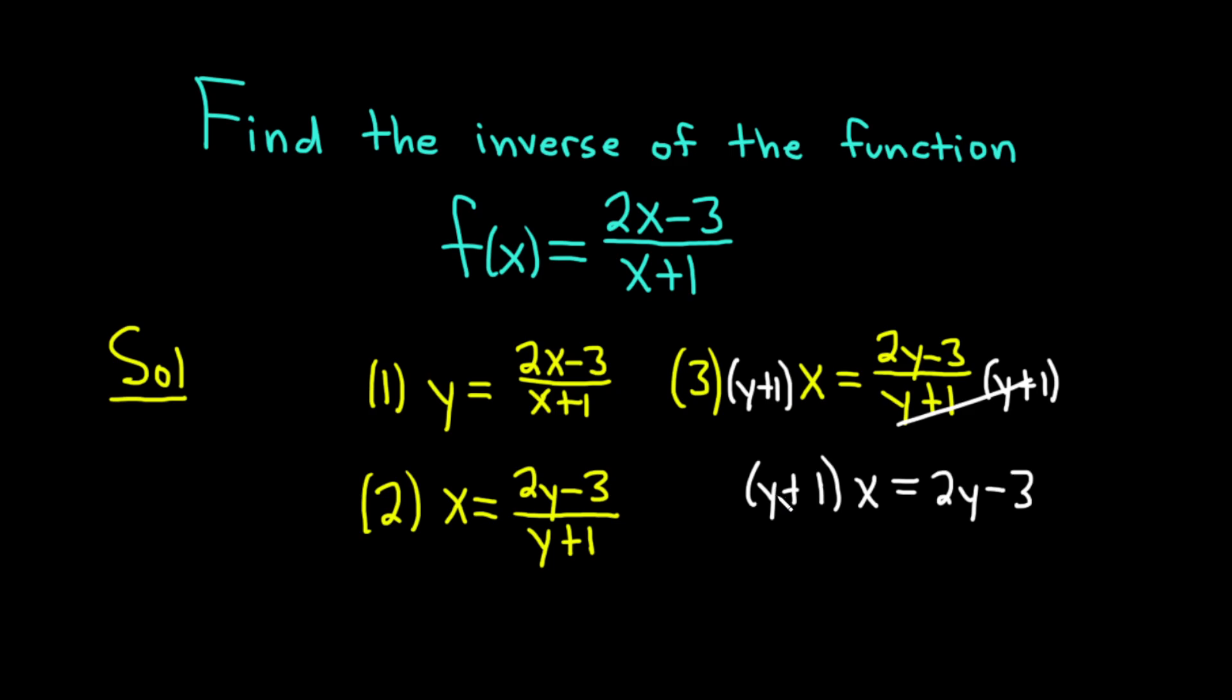And we're looking for y. It's trapped in these parentheses. So let's go ahead and distribute. x times y is just going to give us xy. And then x times 1 is just going to give us x. Now on the right-hand side, we have 2y minus 3.